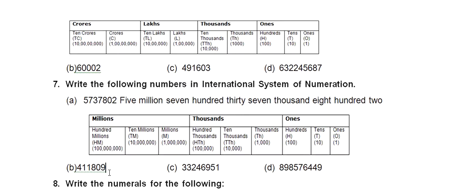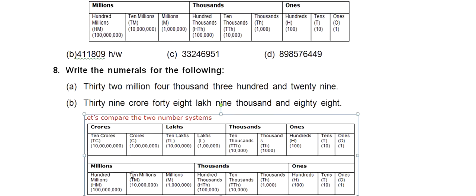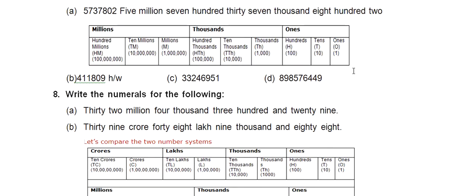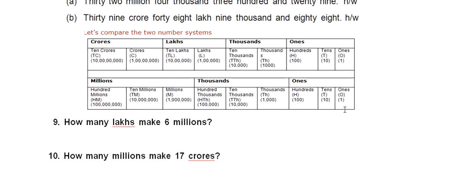Parts B, C, and D of the international numeration question are your homework — each is similar to the example shown. Next, write the numerals for the following: they have given an expansion in words and you have to write the number. That is also your homework. Try it first and match your answers — this is our revision lecture so I know you can solve it yourself.